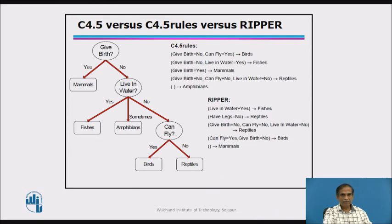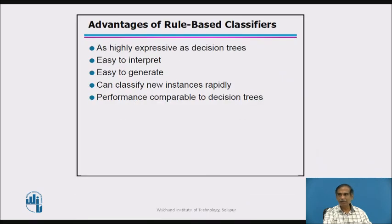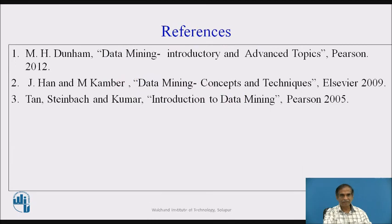As an example, for a given data set a decision tree is generated, and rules are extracted using C4.5 and RIPPER to get better generalized rules. The advantages of rule-based classifiers are that they are highly expressive like decision trees, easy to interpret, easy to generate, can classify new instances rapidly, and can perform comparably to decision trees.